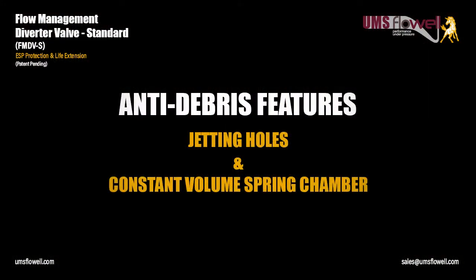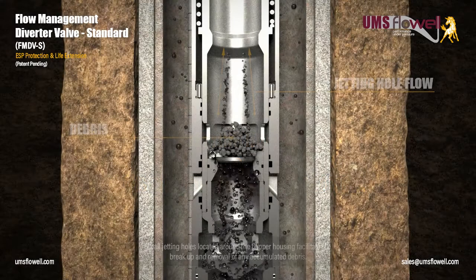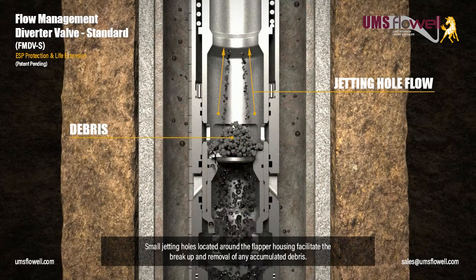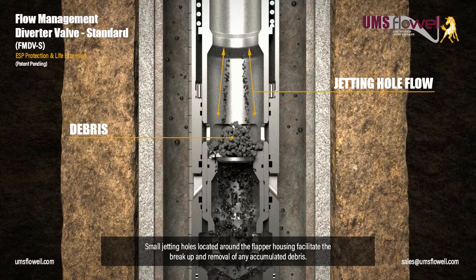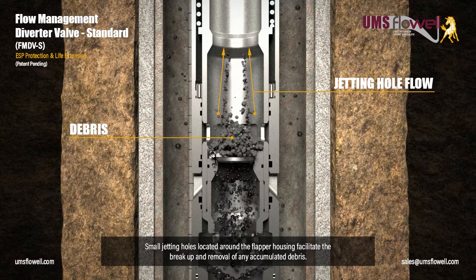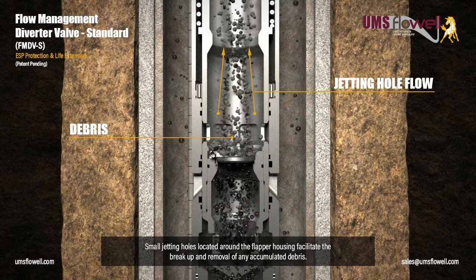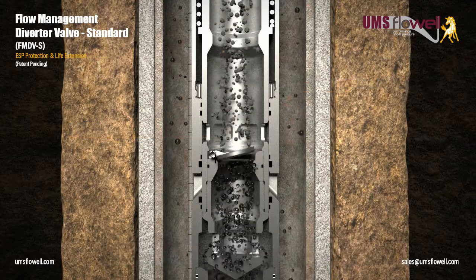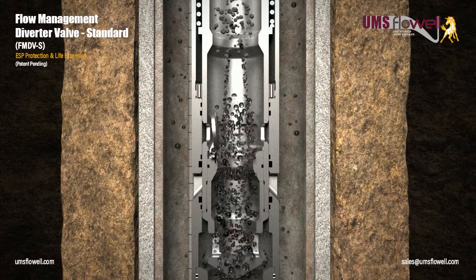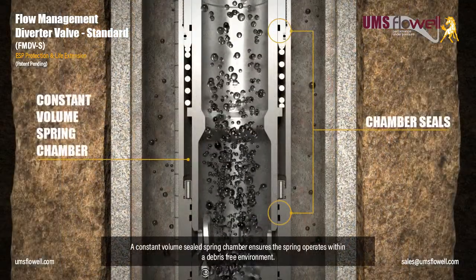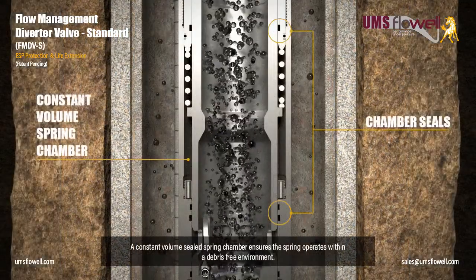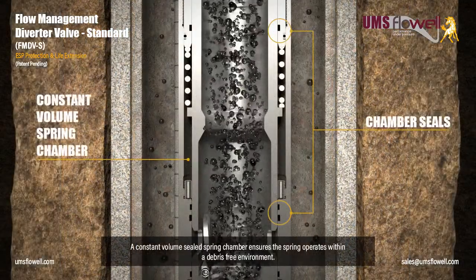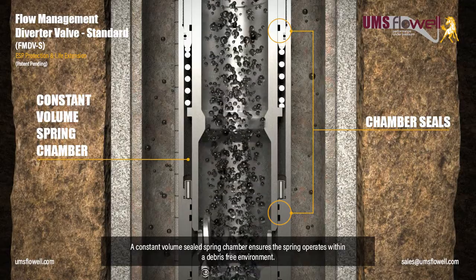Anti-debris features: jetting holes and constant volume spring chamber. Small jetting holes, located around the flapper housing, facilitate the breakup and removal of any accumulated debris. A constant volume sealed spring chamber ensures the spring operates within a debris-free environment.